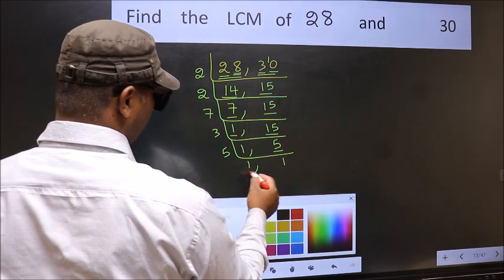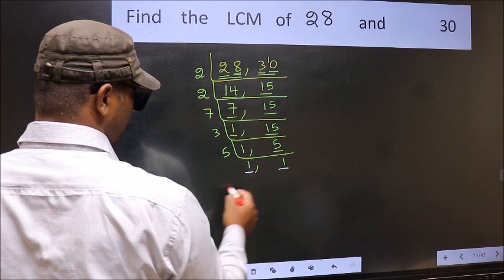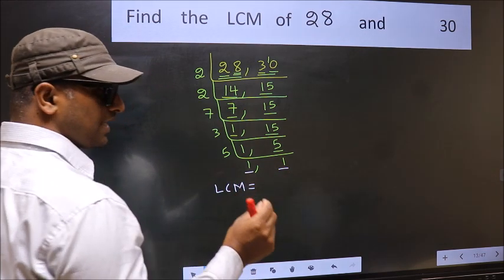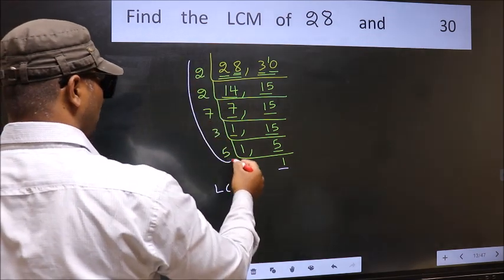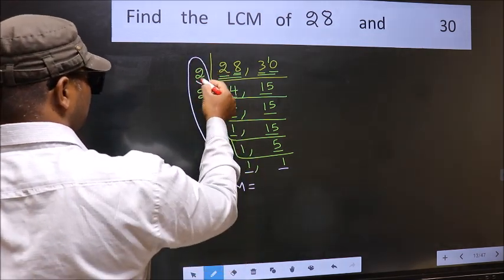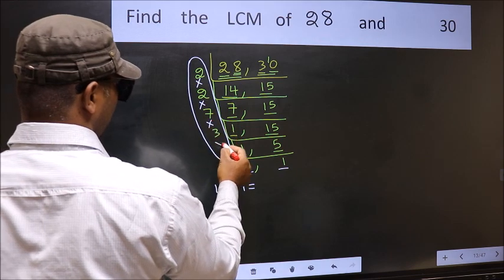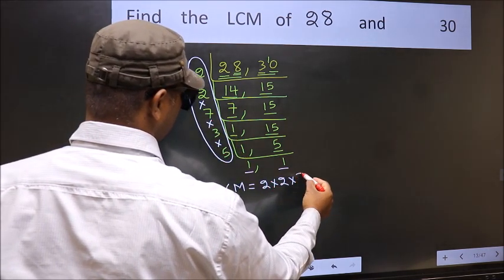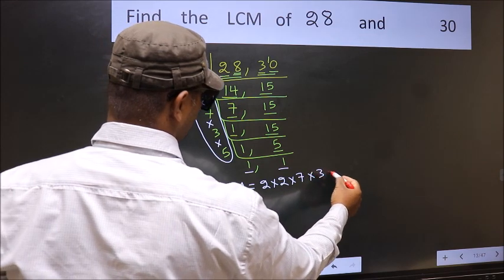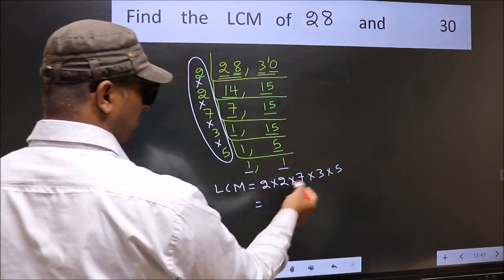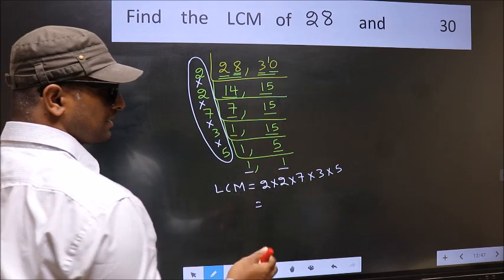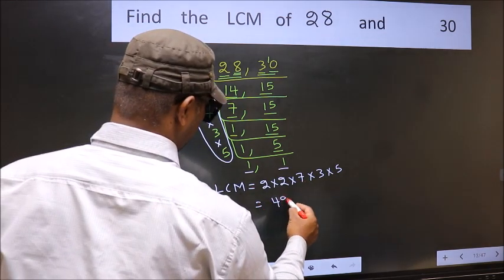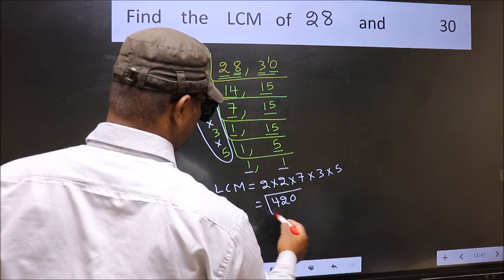So we got 1 in both the places. So our LCM is the product of these numbers. That is 2 into 2, into 7, into 3, into 5. When we multiply these numbers, we get 420 is our LCM.